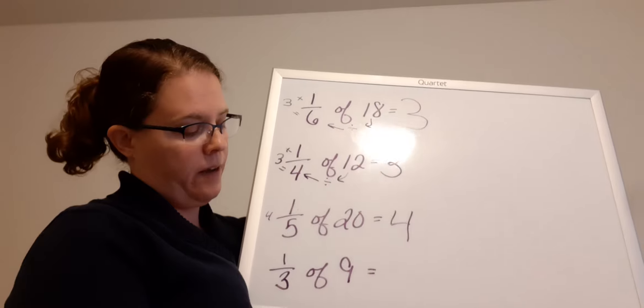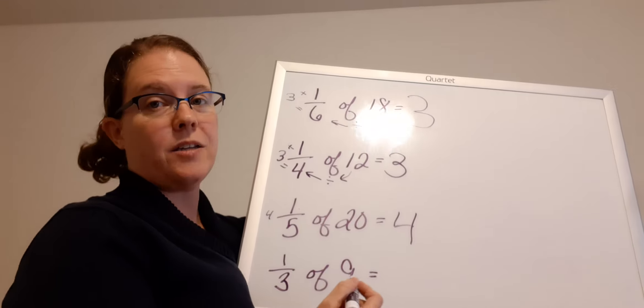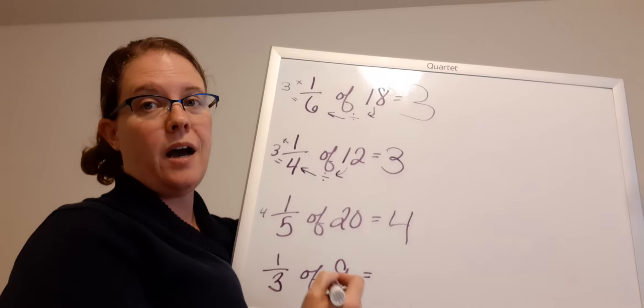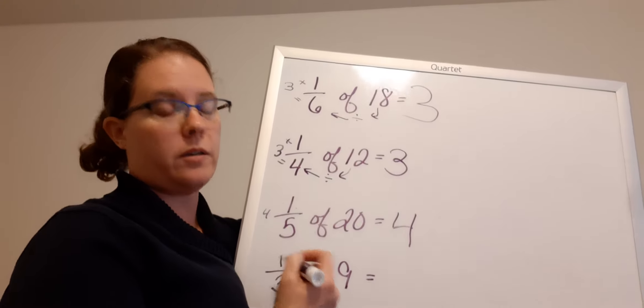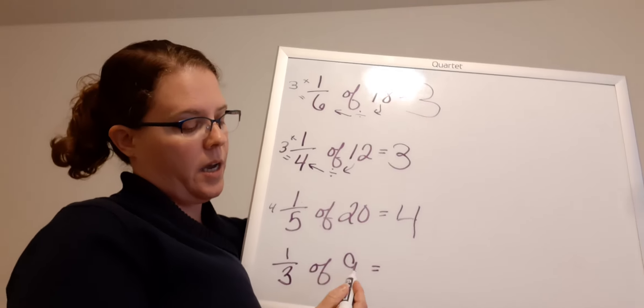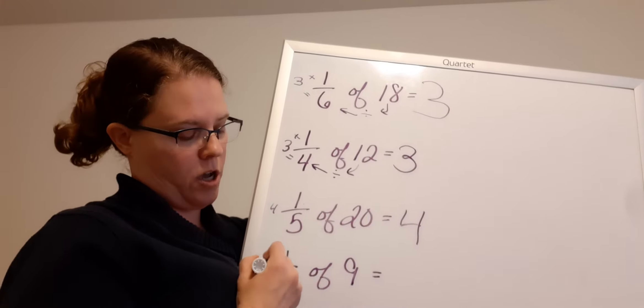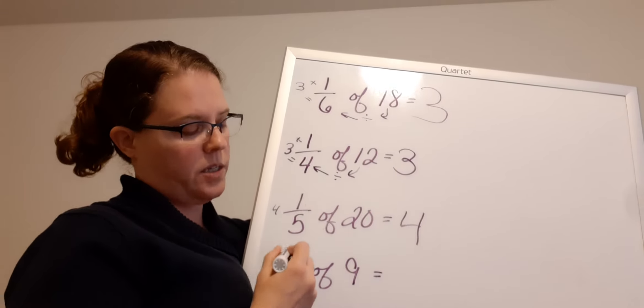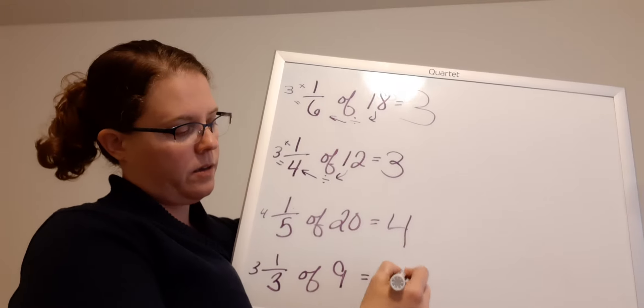Then if I have 1/3 of 9. So I have 9 objects, I want to know how many 1/3 is. So 9 divided by 3. Good job. 3 times 1 equals 3.